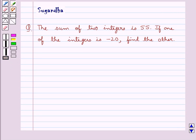Hello and welcome to the session. In this session we discuss the following question which says the sum of two integers is 55. If one of the integers is minus 20, find the other.